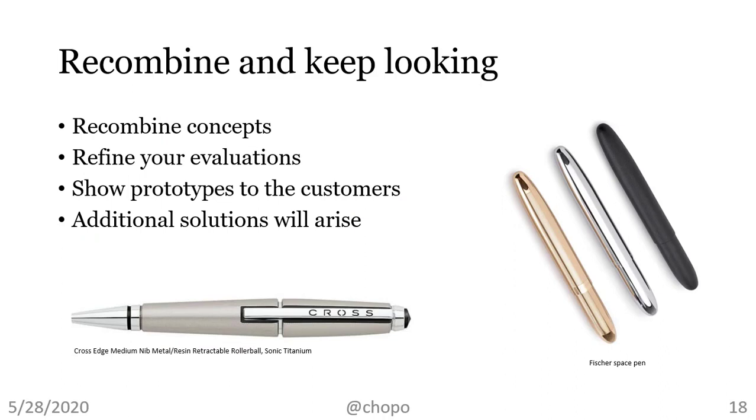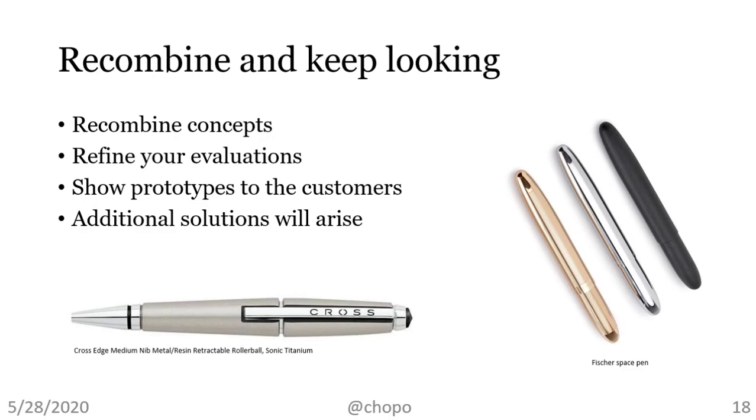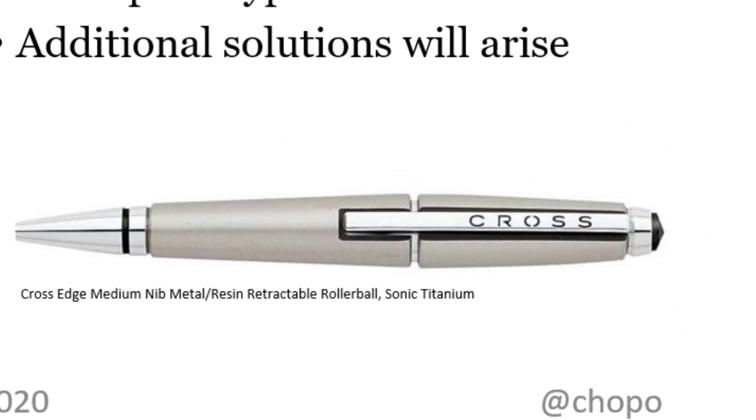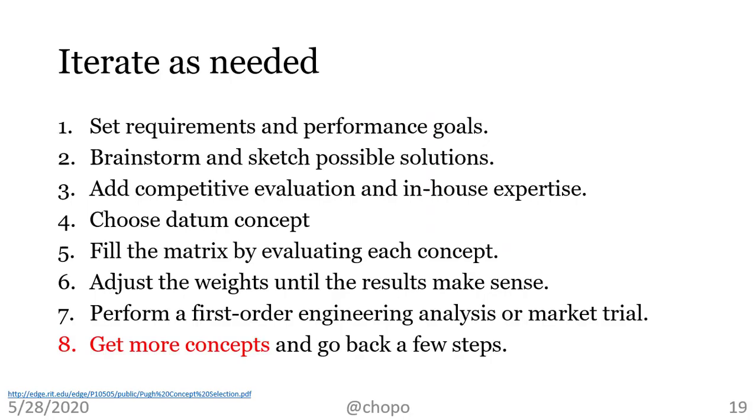An important idea that I did not cover here is that after you get your first set of new concepts, you should not stop there. You can find a couple of concepts and combine their features. So, recombine concepts, refine your evaluations, make prototypes and show them to your customers, or at least show them sketches. After some iterations, a supreme solution may arise. For instance, how about a short cross pencil? Or the space pen that writes in zero gravity like a pencil? This is an iterative process. At any step, you can go back to the prior steps. But be sure to think about step eight, seek more solutions.